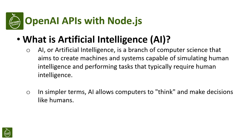So what is artificial intelligence? Artificial intelligence, or AI for short, is a branch of computer science that aims to create machines and systems capable of simulating human intelligence and performing tasks that typically require human intelligence. In simpler terms, AI allows computers to think and make decisions just like a human.